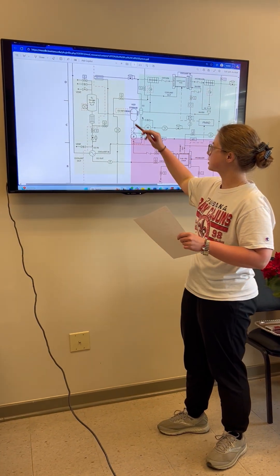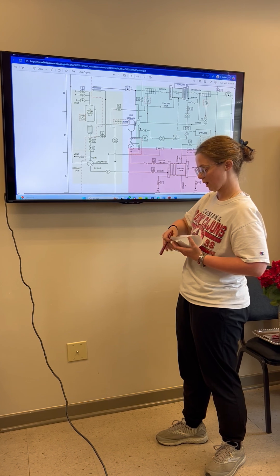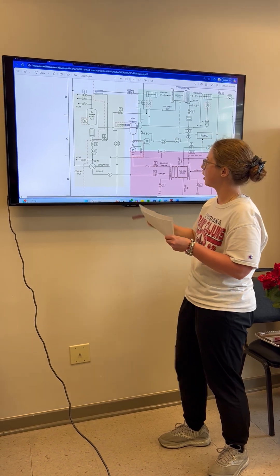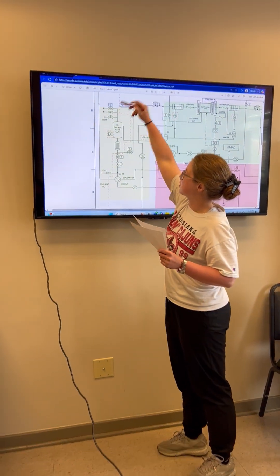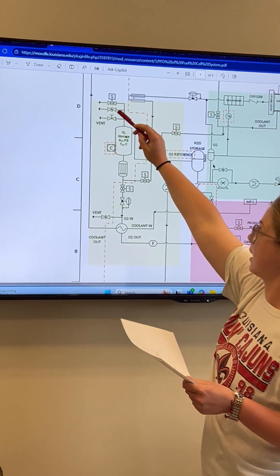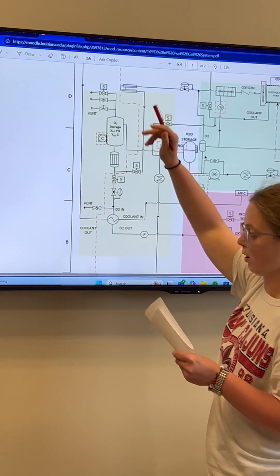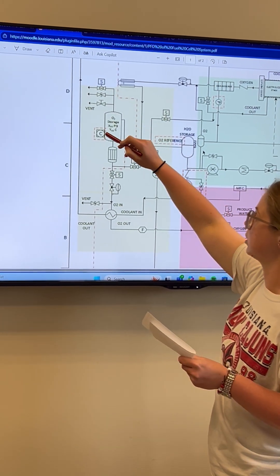I'm going to be explaining the yellow part of the diagram today. To begin with, we have three valves up top: a solenoid ball valve, a relief valve, and a hand valve bringing oxygen into our O2 storage, which is connected to our cryo-cooler.